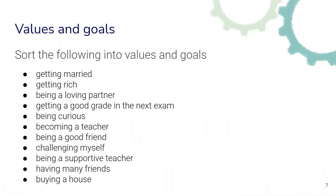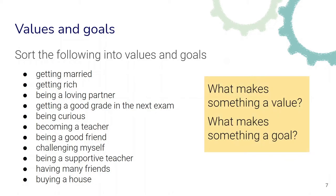In this activity we can further explore these differences. Try to sort the following examples into what you think are values and goals. After you have done this, think about what makes something a value based on the examples you found, and what makes something a goal. You might want to pause the video to collect your ideas. You can also try to find your own examples of values versus goals.